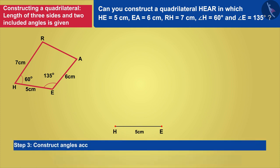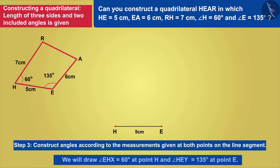Construct angles according to the measurements given at both points on the line segment. Now, we will draw the angles given at point H and point E on segment HE.